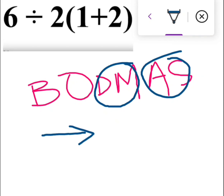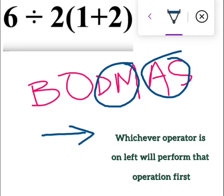Division and multiplication are solved from left to right. If multiplication appears first on the left side, we solve multiplication first, then division. This is the most important point in the BODMAS or PEMDAS rule. PEMDAS is also the same acronym for the order of mathematical operations — specifying which operation should be performed first.